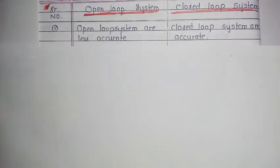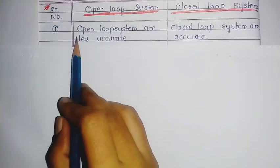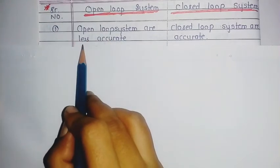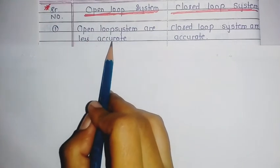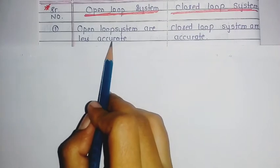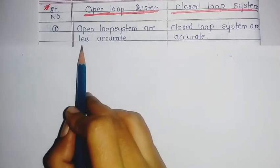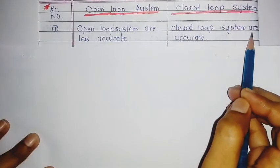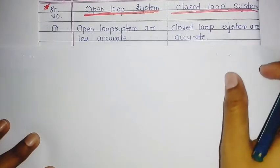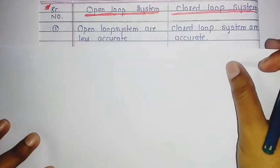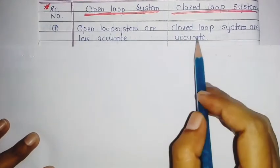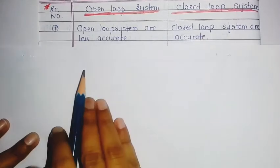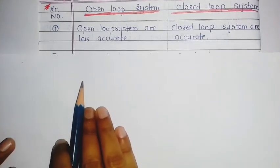The first comparison point is accuracy. The open loop system has less accuracy, while the closed loop system has better accuracy.